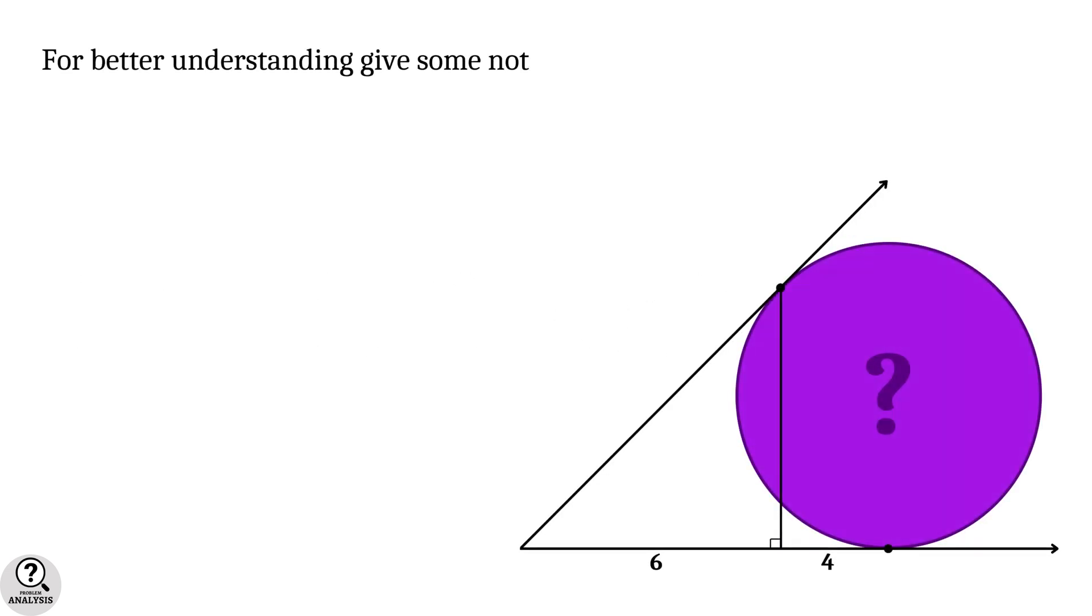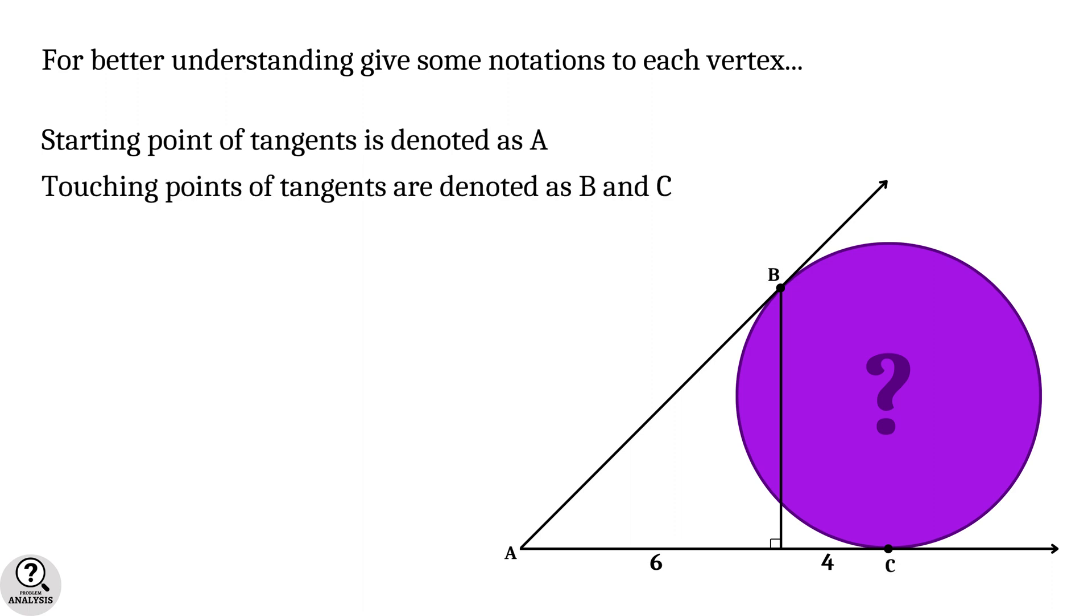For better understanding, let's give some notations to each vertex. The starting point of the tangents is denoted as A, the touching points of the tangents are denoted as B and C, and the remaining two vertices are denoted as D and E.